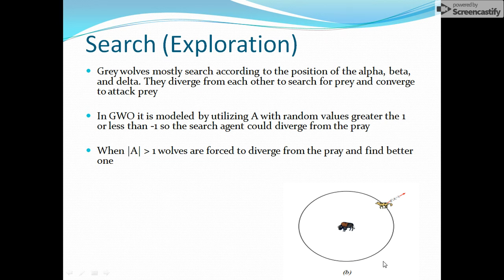Exploration basically means, as you can see in this diagram, the wolf is exploring for a specific prey. There is a value of vector A that we will use later. It is essentially a random value generated each time. If it is greater than one, the wolves are forced to diverge from the prey — they diverge to find a better prey, and when they find it they converge. If vector A is less than one, it is time to attack.